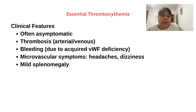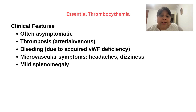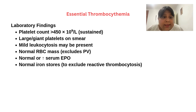Talking about the clinical features: usually these patients are asymptomatic, but sometimes they can present with episodes of thrombosis — both arterial and venous — bleeding due to acquired von Willebrand deficiency, microvascular symptoms like headache and acral paresthesias, and mild splenomegaly.